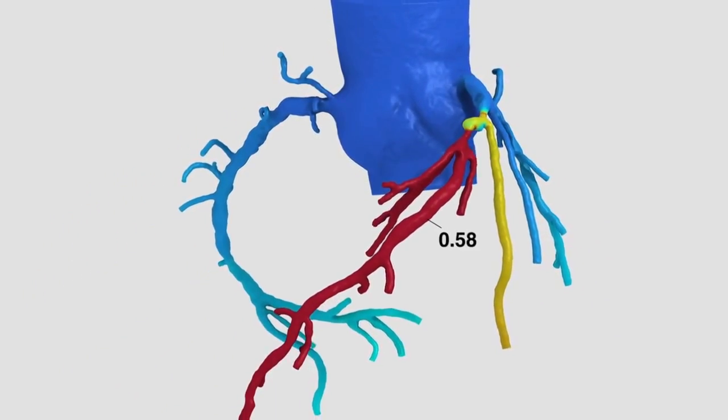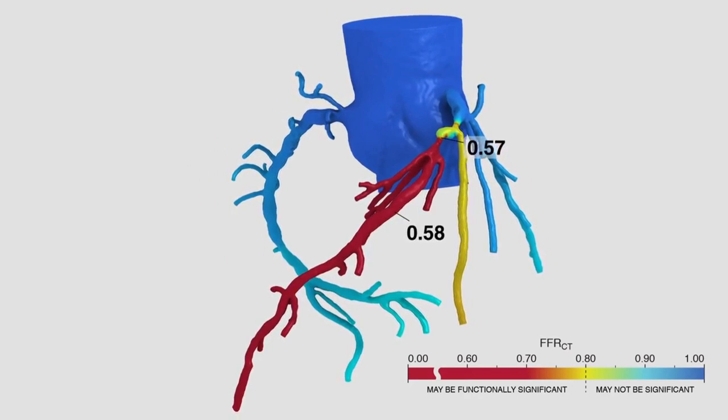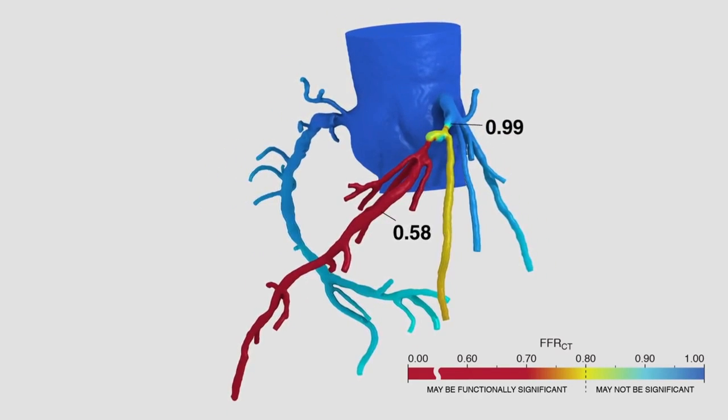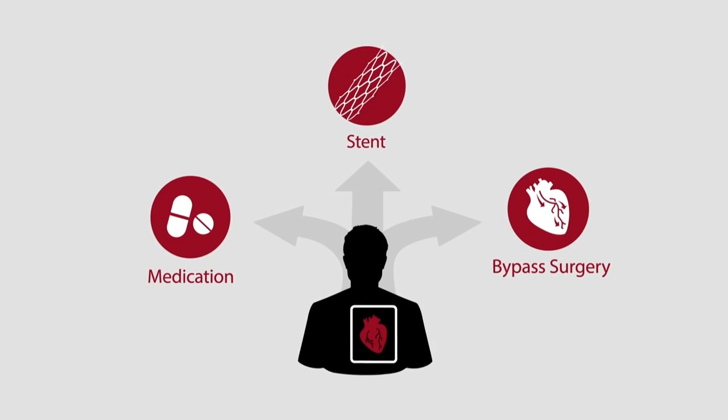The end result of the HeartFlow Analysis is a color-coded map of the coronary arteries, showing the extent to which any narrowings are disrupting blood flow. A physician can use this information to develop a treatment plan that is right for that patient.